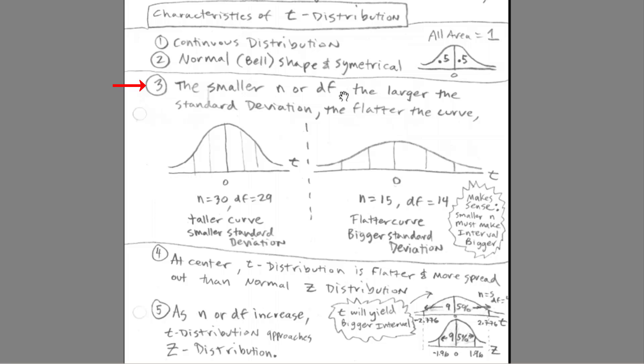The smaller the sample size or degrees of freedom, the larger the standard deviation and flatter the curve. So flat out here, you can see n equals 30 degrees of freedom equals 29, n equals 15 degrees of freedom 14. Much flatter right here in the middle and more spread out. The larger standard deviation, which would mean that the interval would tend to be larger for a given level of confidence. Now, this makes sense. The smaller the n must make the interval bigger.